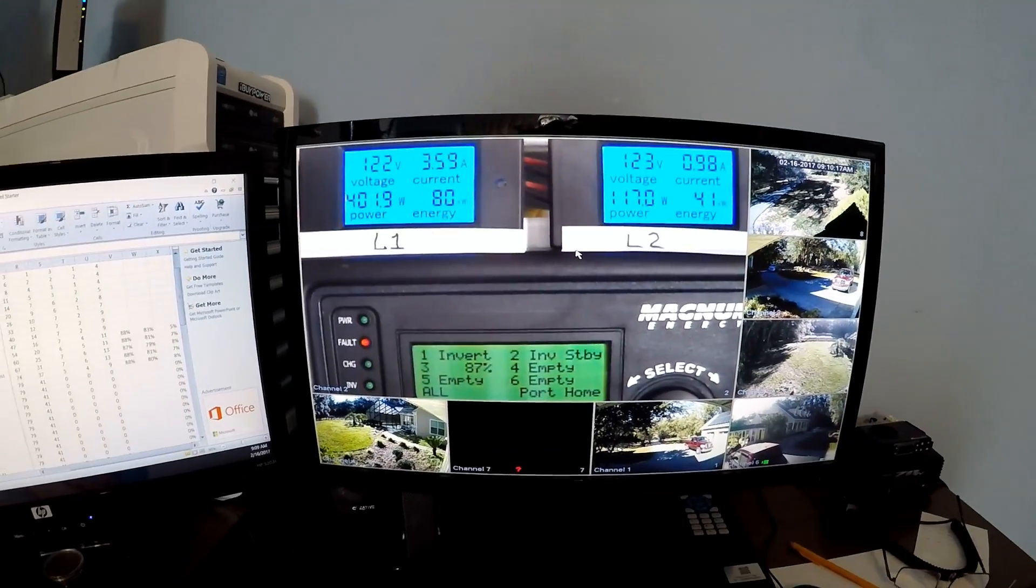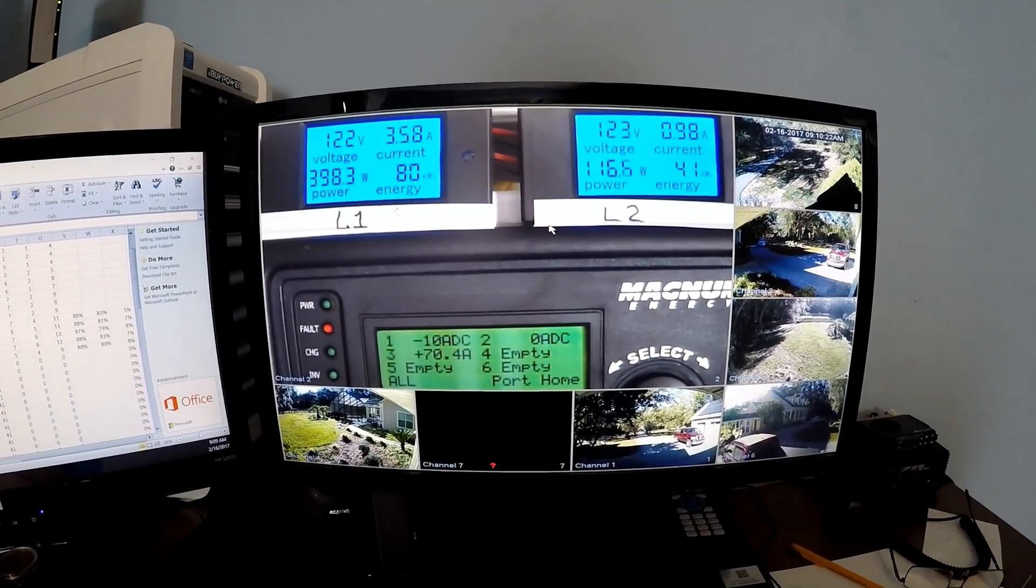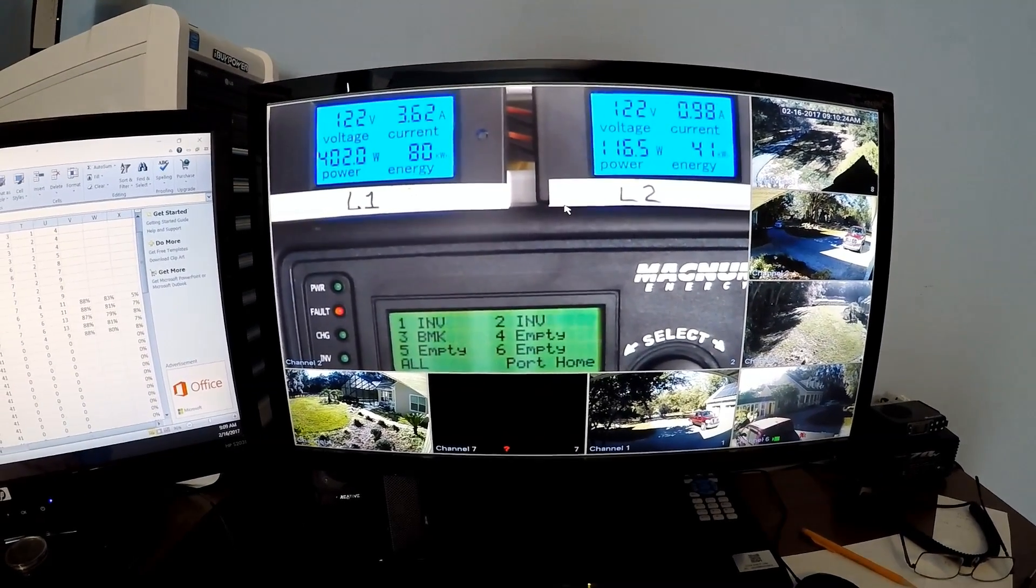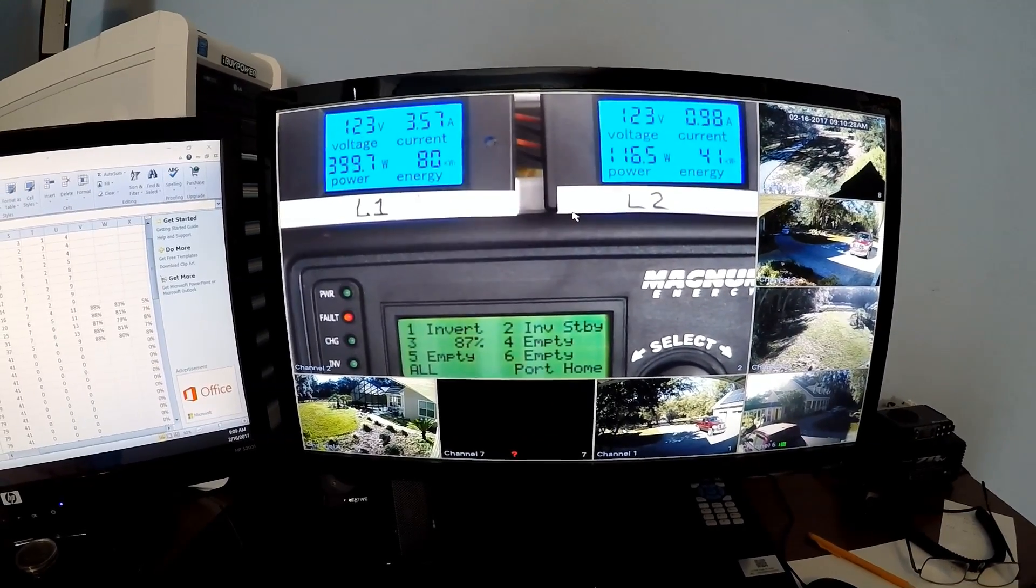Let's take a look over here. Currently using about 500 or 600 watts in the house. And we got a net 70 amps going into the battery. 87% charged.